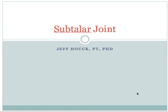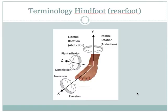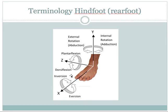This is a presentation on subtalar joint basics. The first thing to understand is that terminology changes as we move into the foot. At the talocrural joint we used internal and external rotation to describe axial rotation around the y-axis, but now as we move into the hind foot and discuss movement between the calcaneus and talus, we use abduction and adduction. Plantar flexion and dorsiflexion stay the same, but frontal plane motion changes from abduction/adduction to inversion and eversion.